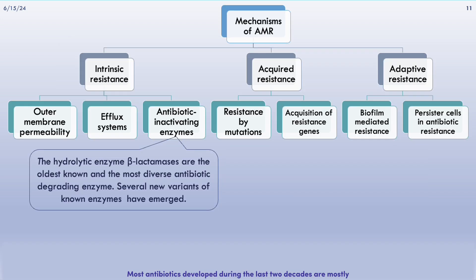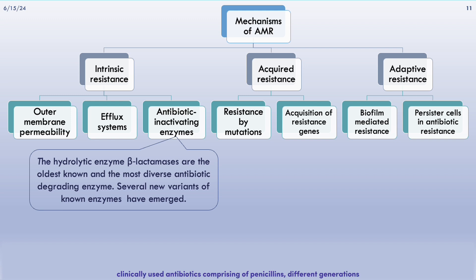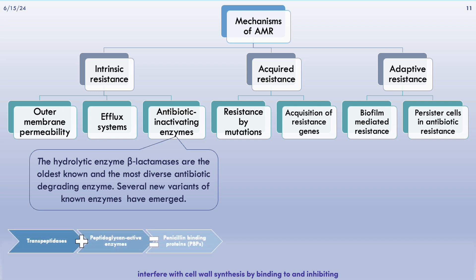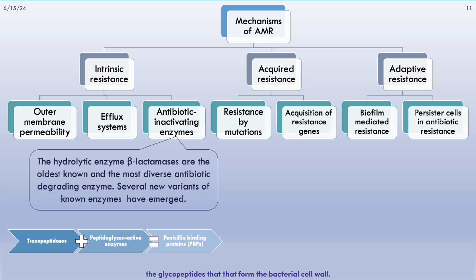Most antibiotics developed during the last two decades are mostly modified versions of existing antibiotics belonging to the same classes, for instance beta-lactams. This group constitutes the largest group of clinically used antibiotics, comprising penicillins, different generations of cephalosporins, carbapenems, and monobactams. These antibiotics interfere with cell wall synthesis by binding to and inhibiting transpeptidases and peptidoglycan-active enzymes, collectively referred to as penicillin-binding proteins, that catalyze the cross-linking of glycopeptides forming the bacterial cell wall.